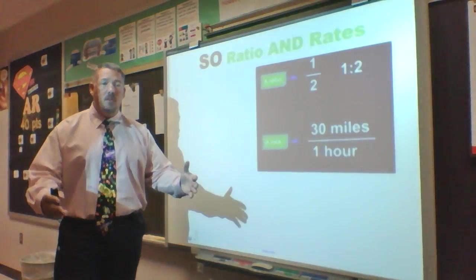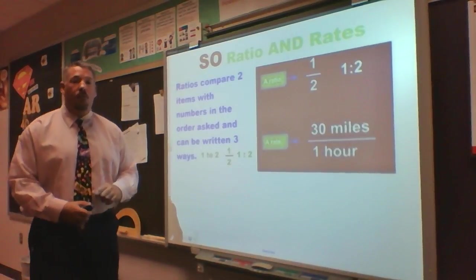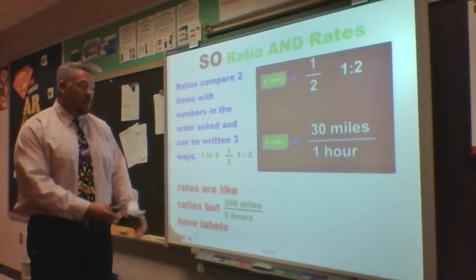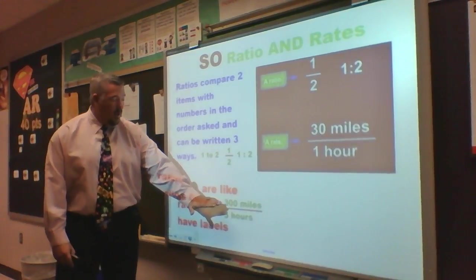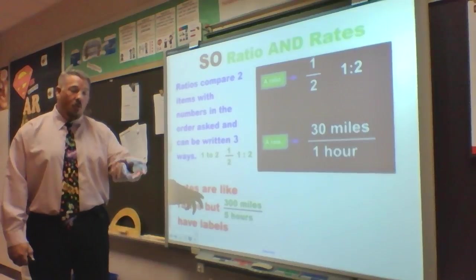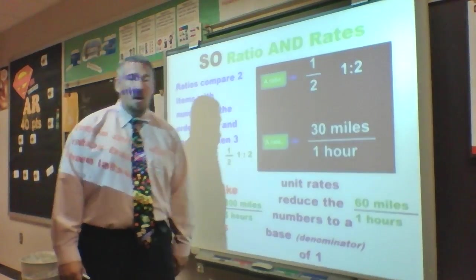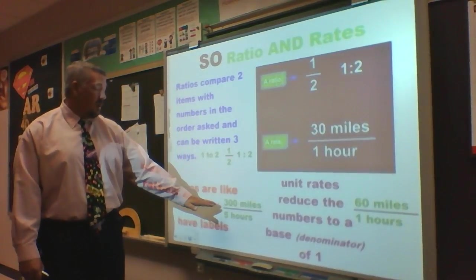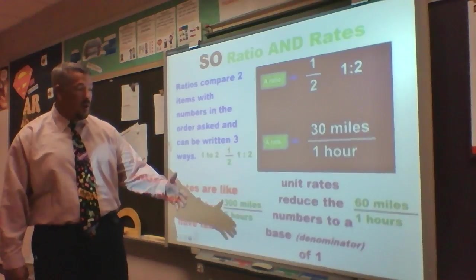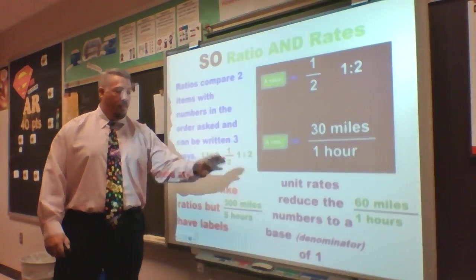When we talk about ratio and rates: a ratio is just comparing two different numbers, written in one of three ways. A rate compares two items that have labels not alike — here I have 300 miles per five hours for my journey. My unit rate is when I reduce those values to where I have one as my denominator. If a journey was 300 miles and took five hours, I could say I went an average of 60 miles per hour. Per hour just means one hour — that's my unit rate.